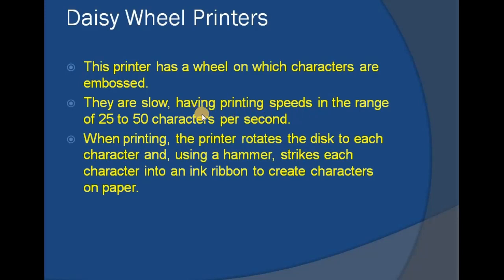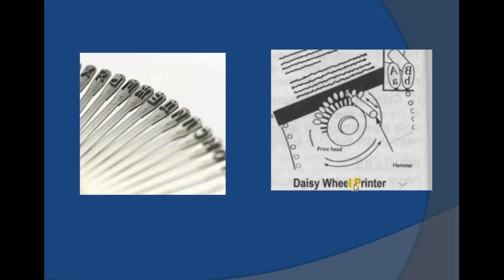Daisy wheel printers are very slow, with printing speeds ranging from 25 to 50 characters per second. When printing, the disc rotates to each character position, and a hammer strikes the character into an ink ribbon to create output on paper. The drawback of daisy wheel printers is the same as other impact printers — mechanical movement, a continuously rotating motor, and other parts make them very noisy. These days we don't prefer using them.